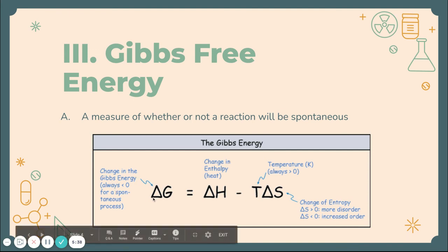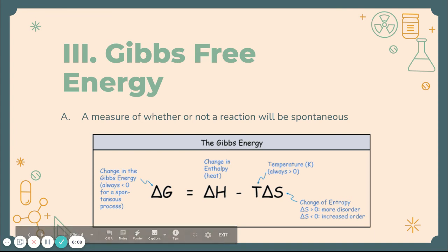The change in Gibbs energy: the triangle just means change. So delta H is change in enthalpy, delta S is change in entropy, T is temperature, and delta G is the change in Gibbs free energy — that's the calculation answer. If delta G is less than zero — meaning negative — that means the reaction is spontaneous. Note that negative energy means an exothermic reaction, but negative delta G means a spontaneous reaction. A positive delta G means the reaction would need a catalyst to move forward.